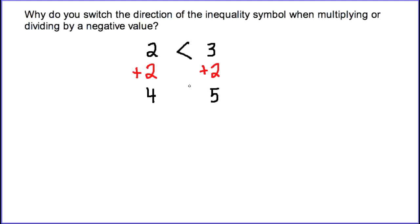And clearly, once again, 4 is still less than 5. Let's try some subtraction. This time we'll subtract 7 from the left and subtract 7 from the right. So 4 minus 7 is negative 3, and 5 minus 7 is negative 2, and from our work with integers, we know that negative 3 is still less than negative 2.